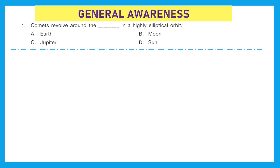The first section is General Awareness. Question 1: Comets revolve around the dash in a highly elliptical orbit. Is it Earth, Moon, Jupiter, or Sun? The right answer is option D, Sun. Comets are cosmic snowballs of frozen gases, rock and dust that revolve around the Sun.